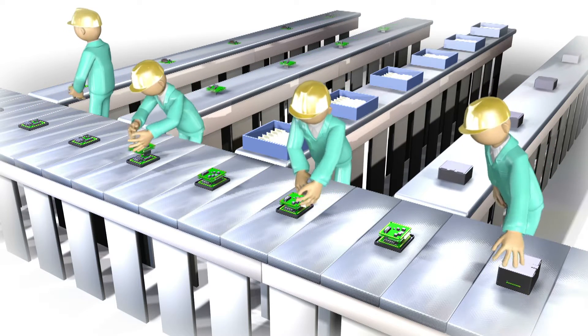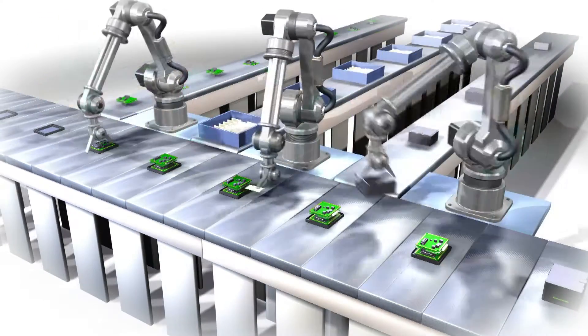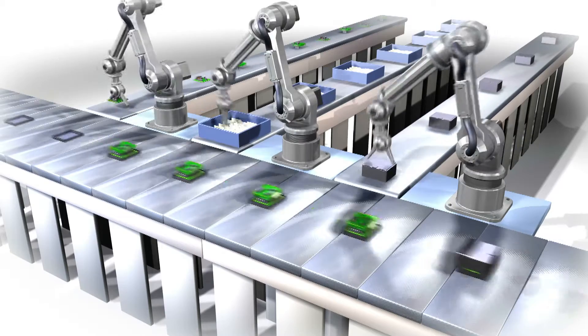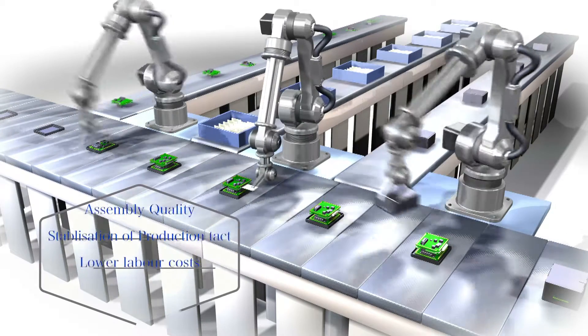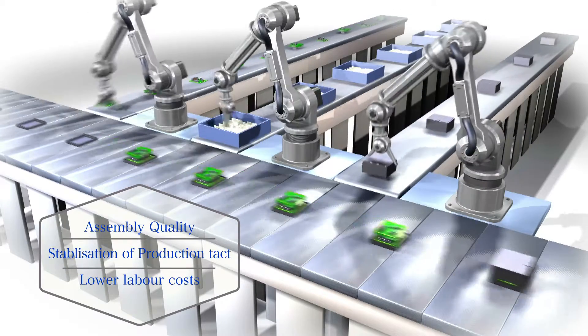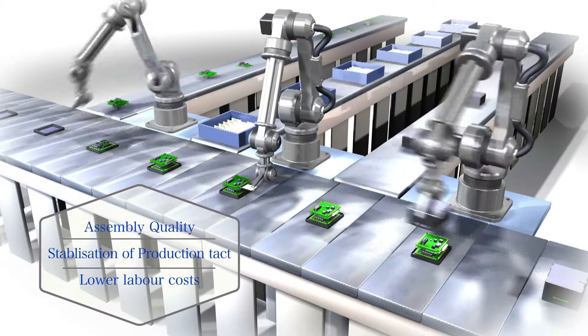The trend for assembly process has been shifting towards automation where robots automatically assemble parts. Assembly automation contributes to stabilization of quality and production tact, as well as lower labor costs.